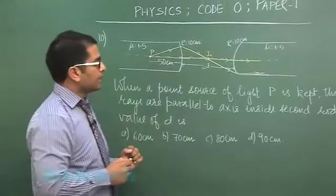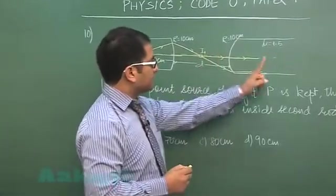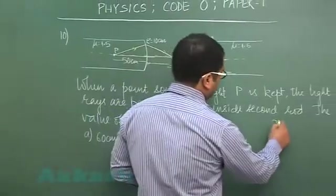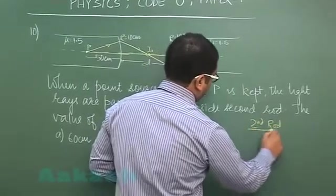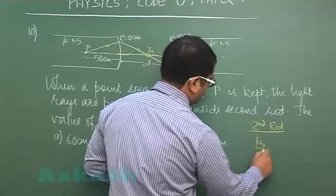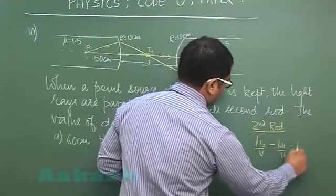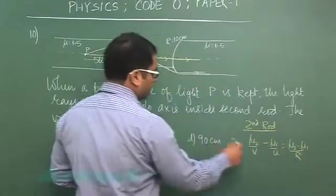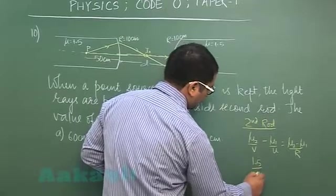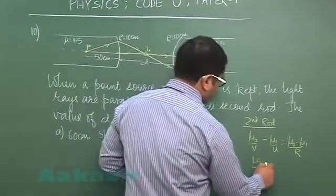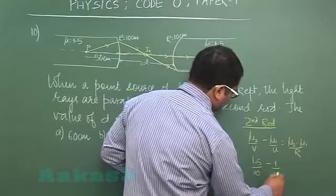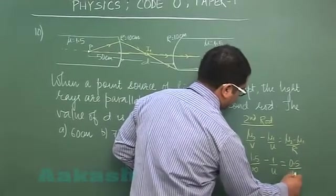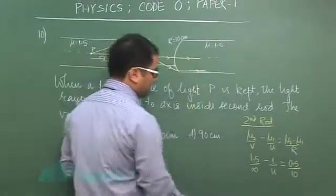So that would be the location of i1, the image due to the first rod, and this i1 would be acting as the object for the second rod. So let us try to see if we go for second rod, the corresponding formula would be mu2 by v minus mu1 by u is mu2 minus mu1 by r. mu2 minus mu1 by 1 would be 0.5 and radius that comes out to be 10 and plus 10 owing to the sign convention.